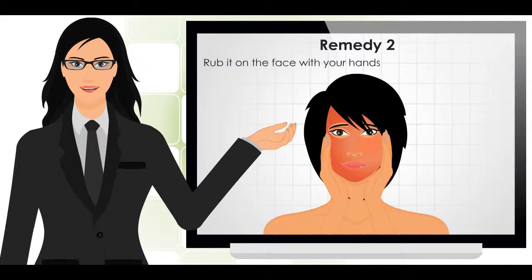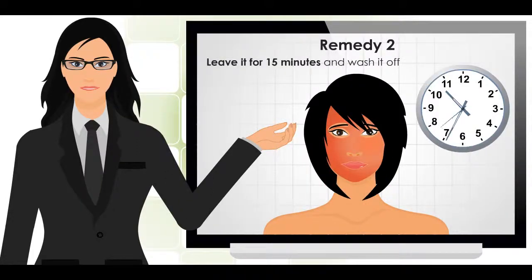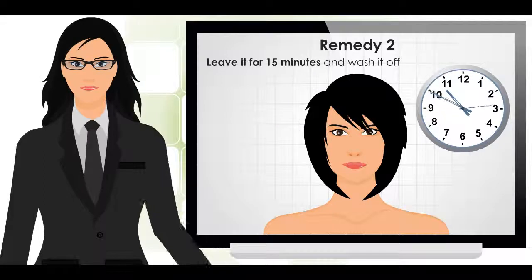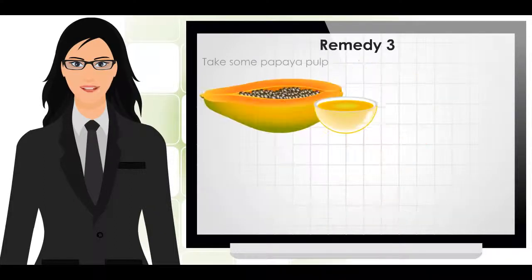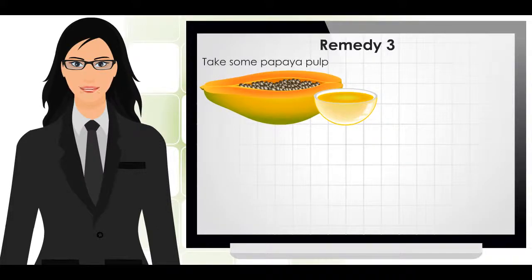Take some tomato pulp and rub it on the face with your hands. Leave it for 15 minutes and wash it off. Tomato has natural bleaching properties that help to give an instant glow.